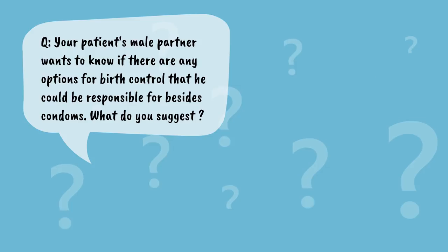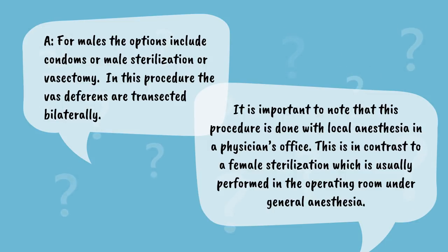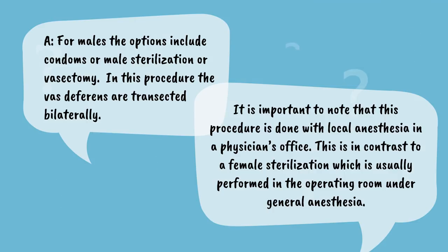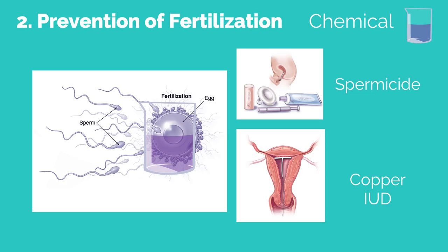Let's pause, think, and apply. Your patient's male partner wants to know if there are any options for birth control he can be responsible for besides condoms. For males, the options include condoms or male sterilization (vasectomy), in which the vas deferens are transected bilaterally. Importantly, vasectomy is performed with local anesthesia in a physician's office, in contrast to female sterilization which is usually performed in the operating room under general anesthesia.